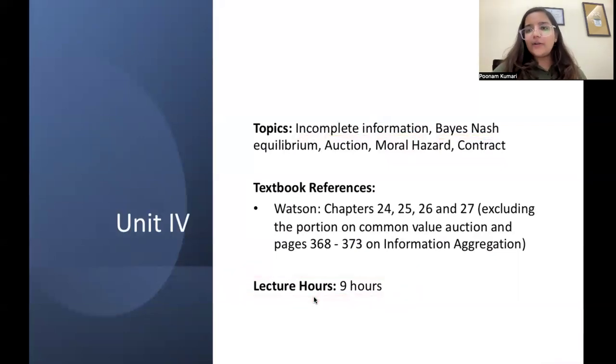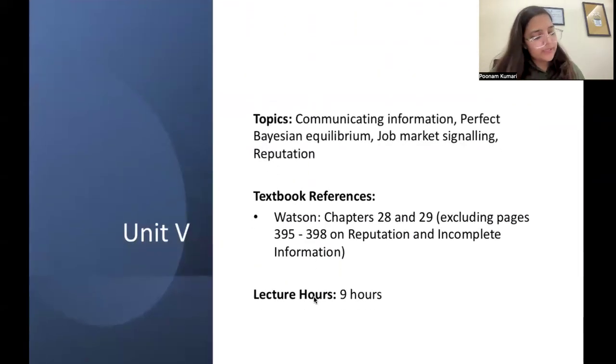Final unit, Unit 5, covers communicating information: perfect Bayesian equilibrium, job market signaling, and reputation. Many of these phenomena you'll relate to practical life; some ideas might seem absurd. It will be a mix of both relatability and abstraction. Reference is Watson chapters 28 and 29, excluding pages 395 to 398 on reputation and incomplete information. What has to be skipped and covered has been mentioned. Weightage is 9 hours.